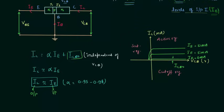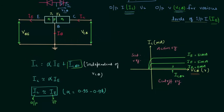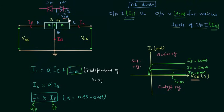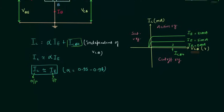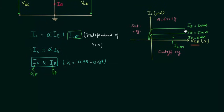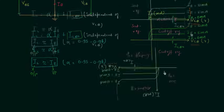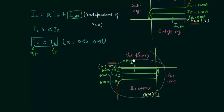An important thing to note: if we keep increasing VCB, that is increasing the reverse bias potential, there will eventually be breakdown and the current will increase rapidly. However, this situation never really arises because the transistor cannot withstand the high power being dissipated. If you invert this plot, you will find it is similar to the reverse bias characteristics of a PN junction diode.